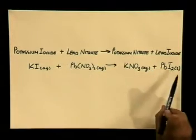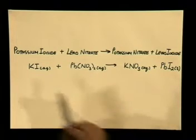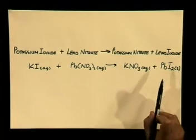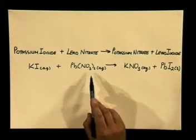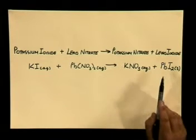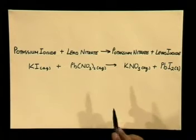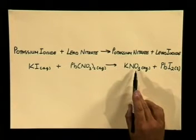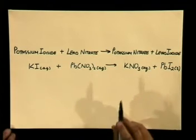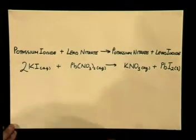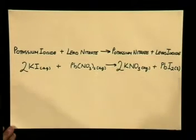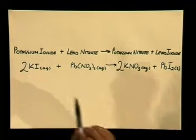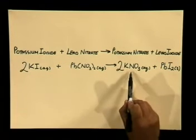Let's now write a balanced chemical equation to describe the chemical reaction. Here are the chemical formulas for the equation written underneath the words. Do you notice that the equation is not balanced? Count the number of ions before and after the reaction — you will notice that we need two iodides at the start and two nitrates at the end. I will put a two in front of potassium iodide at the start and two in front of potassium nitrate at the end. So our equation now reads: 2KI + Pb(NO₃)₂ → 2KNO₃ + PbI₂.